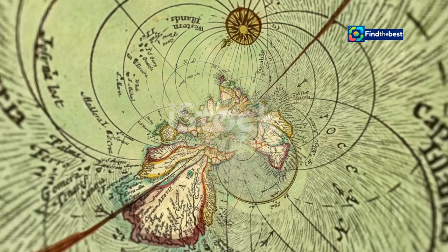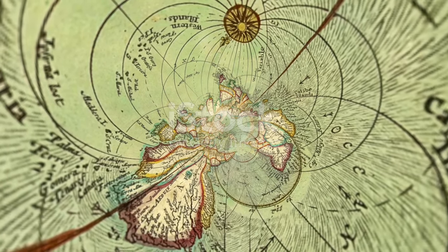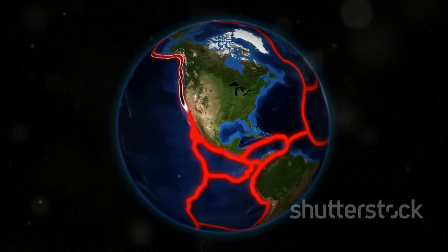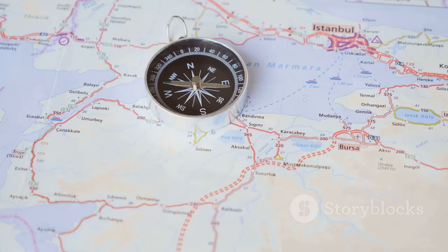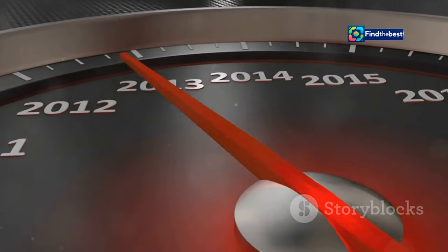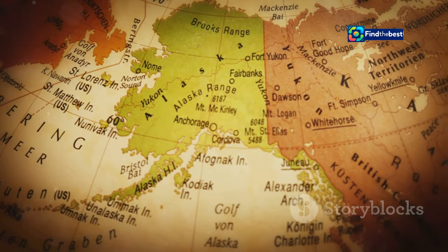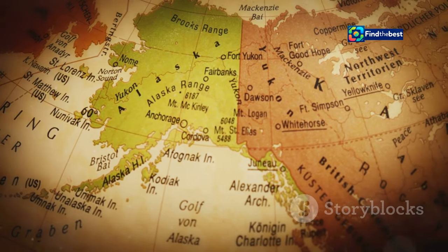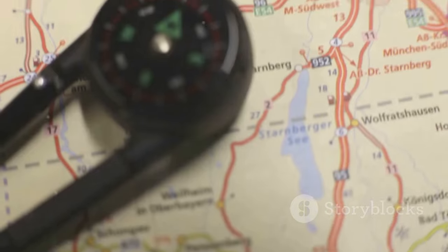The magnetic north pole has never stayed in one place. It's been moving for millions of years. This movement has been slow and somewhat predictable for centuries, but in recent decades, the pace has picked up significantly. For centuries, the magnetic north pole drifted slowly across the Canadian Arctic.